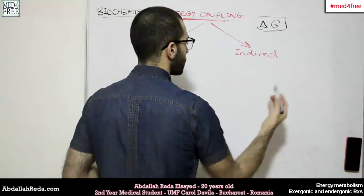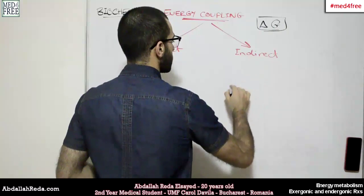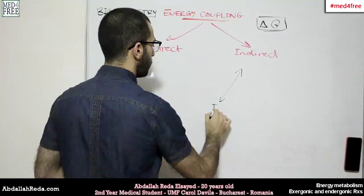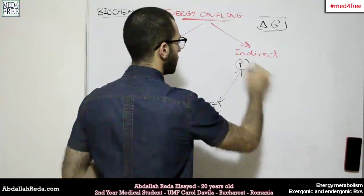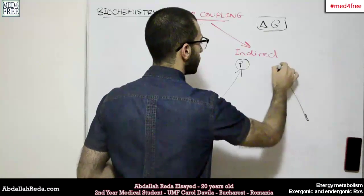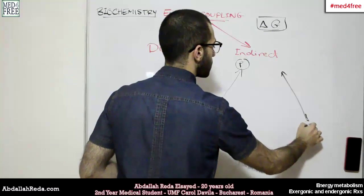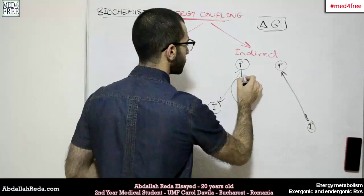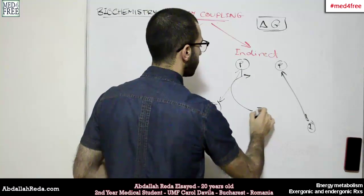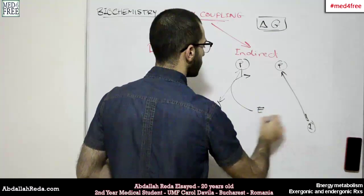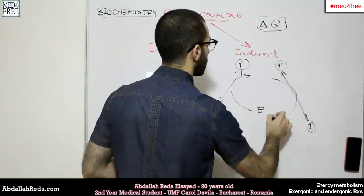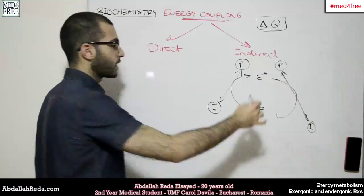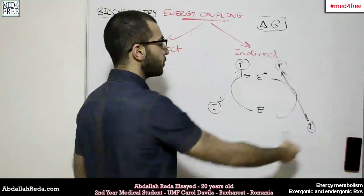We would have a reaction, let's say these are the inputs and these are the products. And we have a totally different reaction, another one where we have the inputs and the products. And here we would have an energy molecule that would transform the energy from one reaction to the other one.